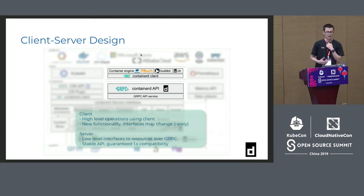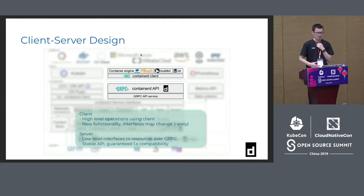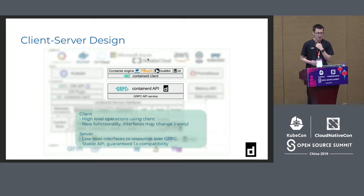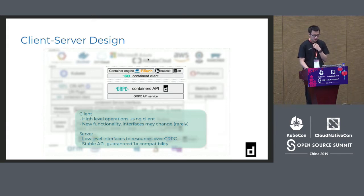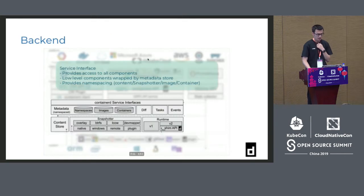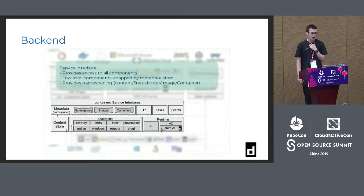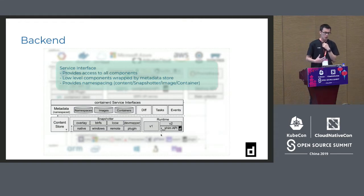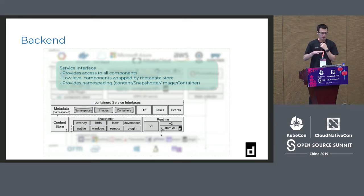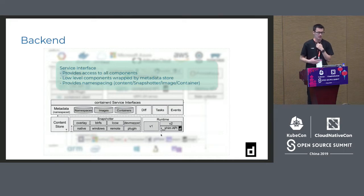Let's focus on the Containerd API. It's a standard gRPC design. It provides a gRPC API which can be used to create various functions — for example, the Docker Engine and CRI. So Containerd is designed to be integrated into a large system. This is the client and service side — we have different modules such as content and runtime.